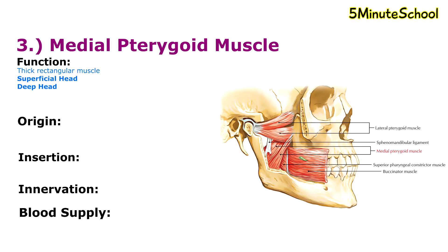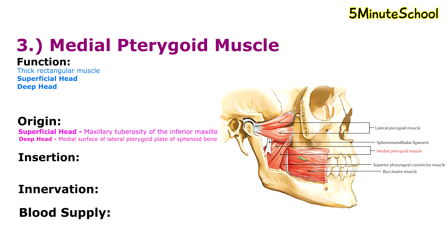The medial pterygoid muscle is a thick rectangular muscle with a superficial head and a deep head. The deep head is larger in size than the superficial head. It originates on the pterygoid process, which is a downward-pointing process extending from the sphenoid bone. The superficial head originates from the maxillary tuberosity of the inferior maxilla, and the deep head originates from the medial surface of the lateral pterygoid plate of the sphenoid bone. The muscle fibers converge inferiorly and form a tendon that inserts on the medial ramus of the mandible.